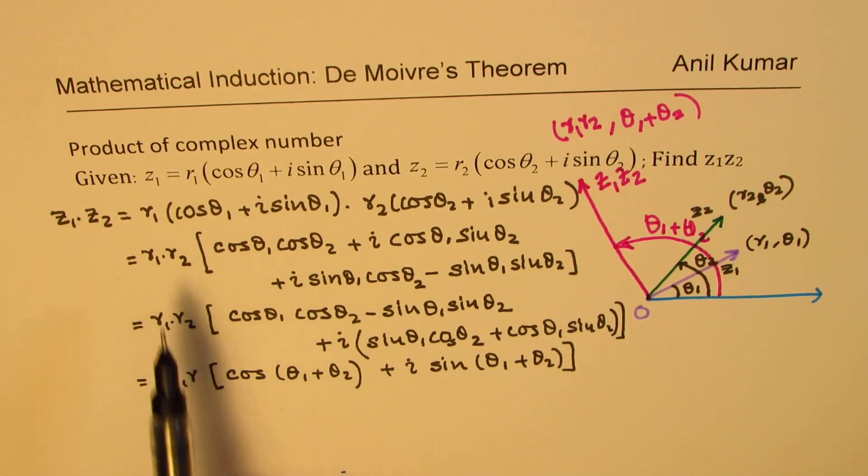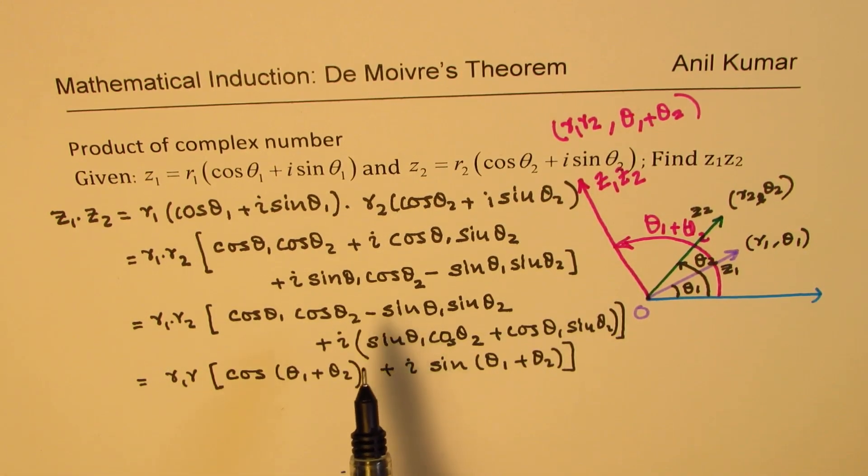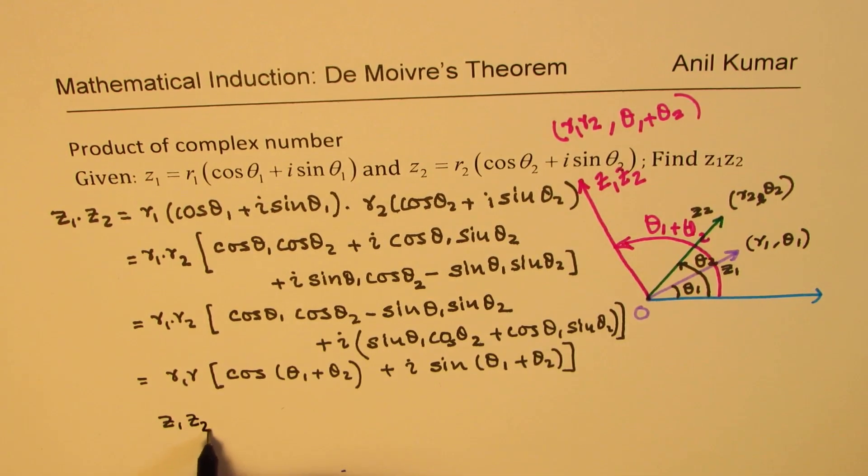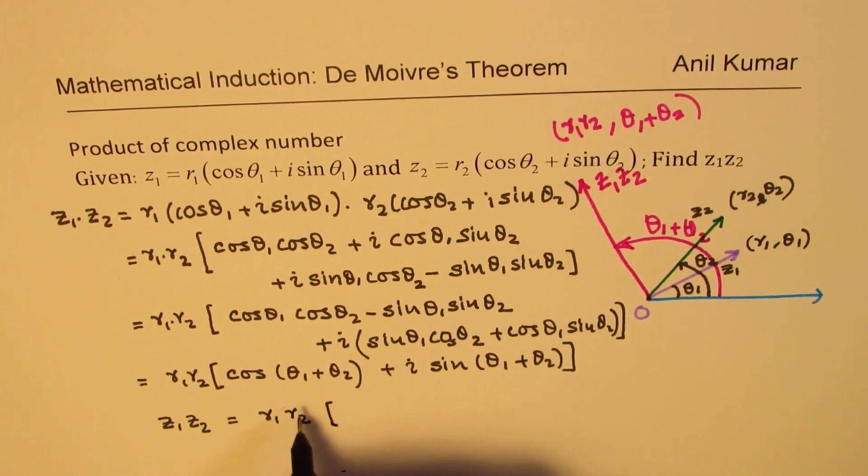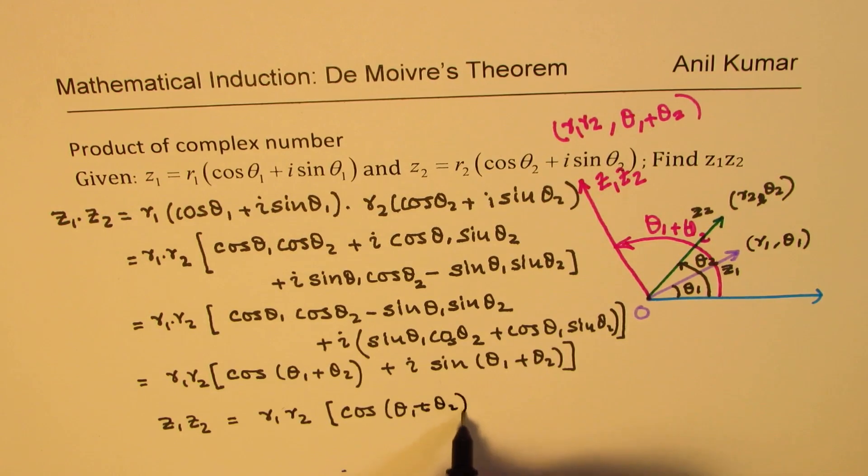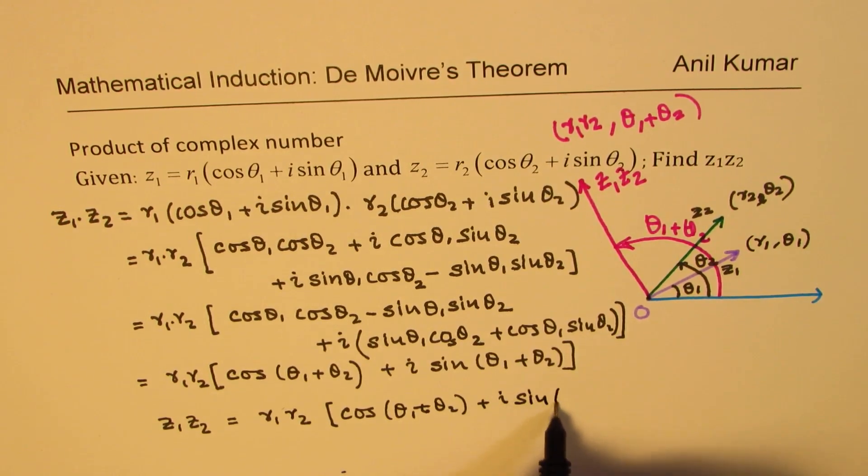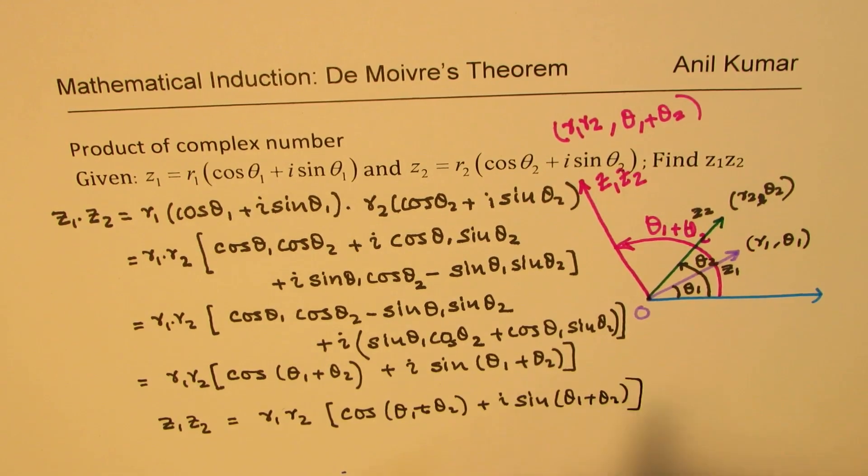Whenever you multiply the complex numbers, their arguments get added up and the absolute value gets multiplied. So if z1 and z2 are multiplied, then what we get is the product of r1 and r2 as their absolute value, and as far as the arguments are concerned, they become sum of those arguments: theta1 plus theta2.